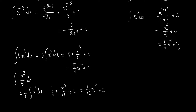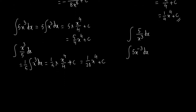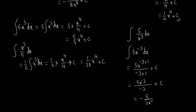For an expression like 5 over x cubed, we rewrite it as 5x to the power negative 3 using the indices rule. Applying integration: 5 times x to the power minus 3 plus 1 divided by minus 3 plus 1, which is 5x to the power minus 2 divided by minus 2 plus C. Simplifying, the answer is negative 5 over 2x squared plus C.